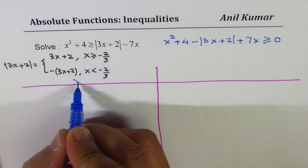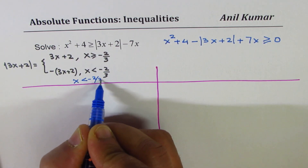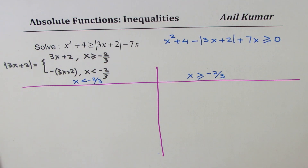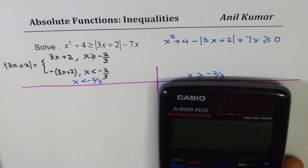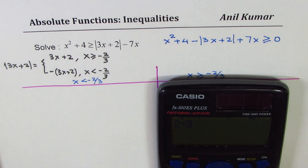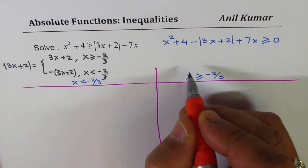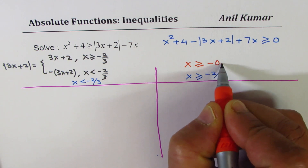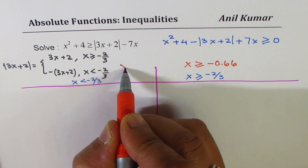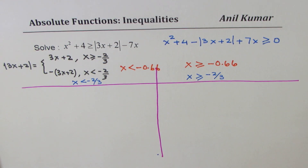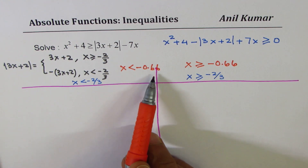In one interval we consider x less than −2/3, and in the other x greater than or equal to −2/3. The decimal equivalent of 2/3 is 0.666, so we can write this as x ≥ −0.666. We'll work to two decimal places for accuracy.